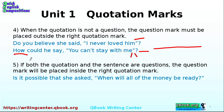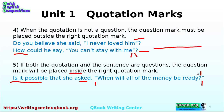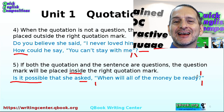When both the quotation and the sentence are questions, the question mark is placed inside. For example: "Is it possible that she asked, 'When will all of the money be ready?'" The quotation "When will all of the money be ready?" is a question, and the sentence "Is it possible?" is also a question. Therefore the question mark goes inside. No space before, no space after — pay attention to the spacing.